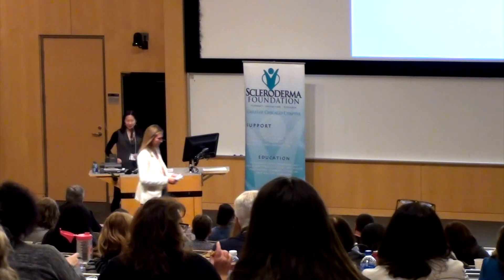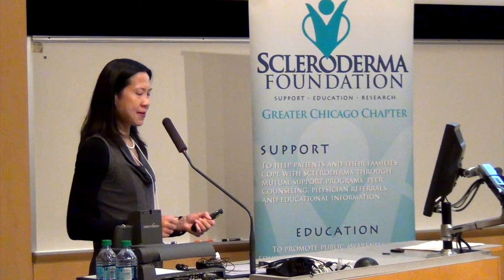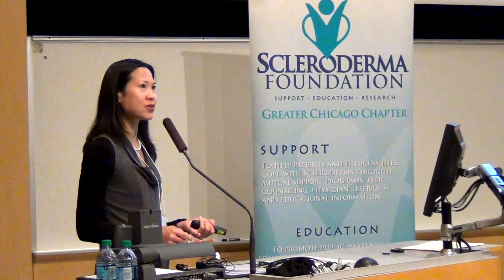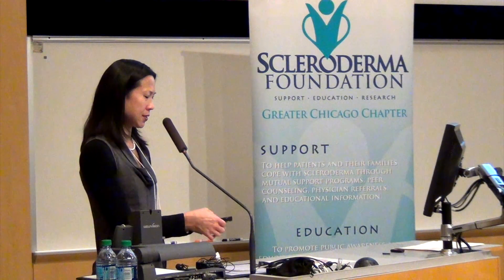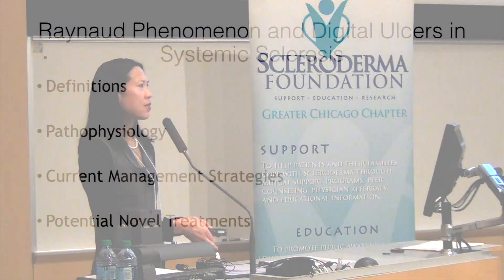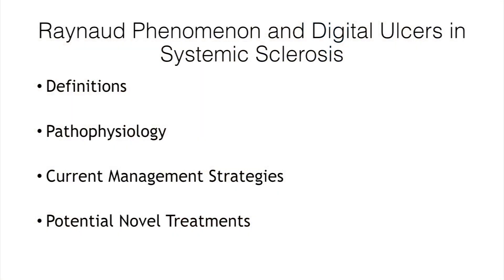Thank you for inviting me to speak today. I'm going to talk today about Raynaud's phenomenon and digital ulcers. First I'm going to go through some definitions and then try to describe the pathology and why patients with systemic sclerosis get bad Raynaud's and digital ulcers. Then I'll talk about some current management strategies and finally end with a slide describing some of the potential modalities that are considered in development.